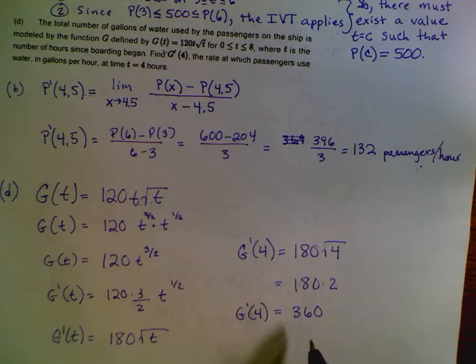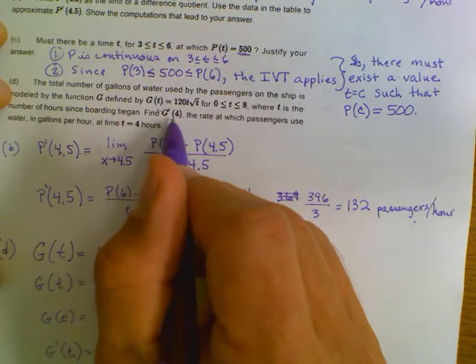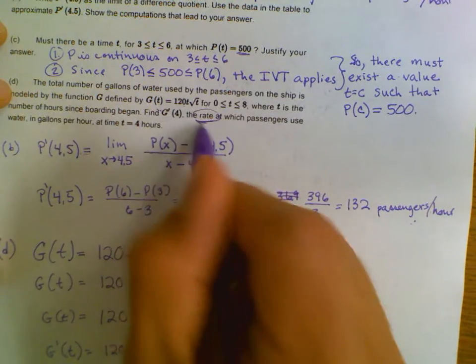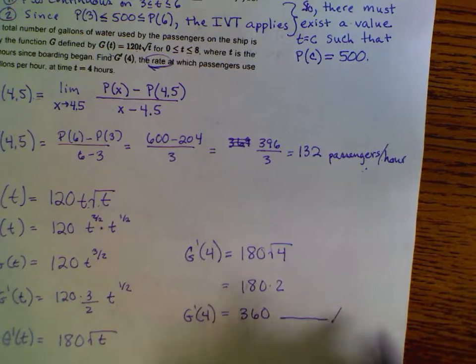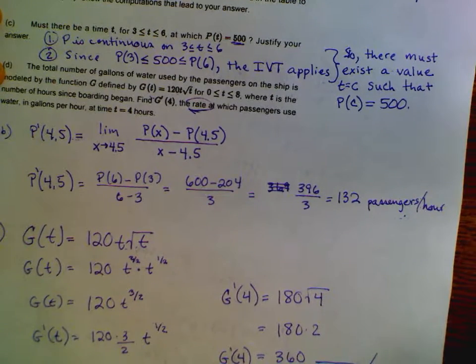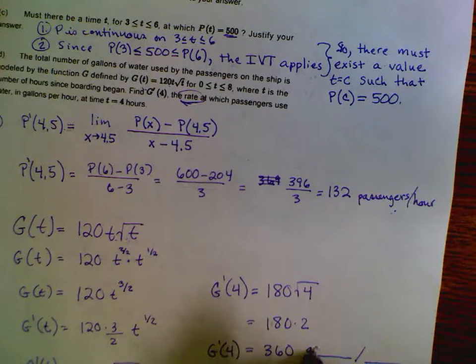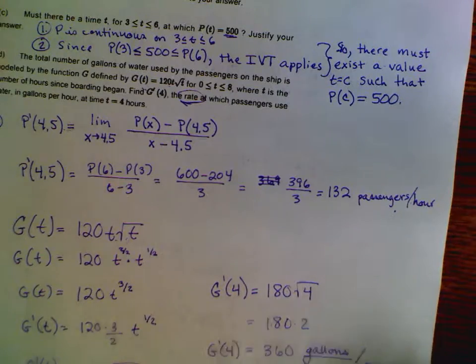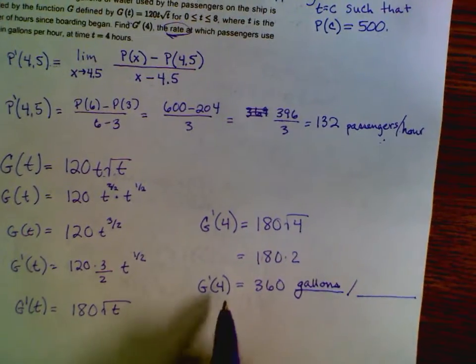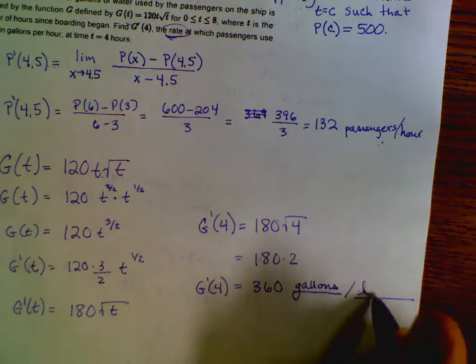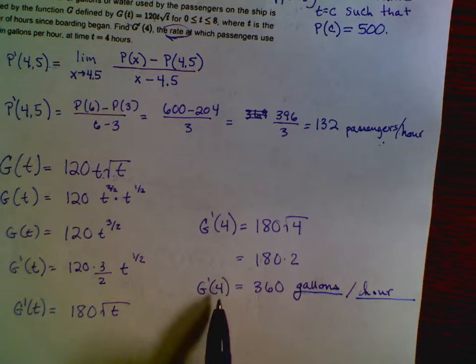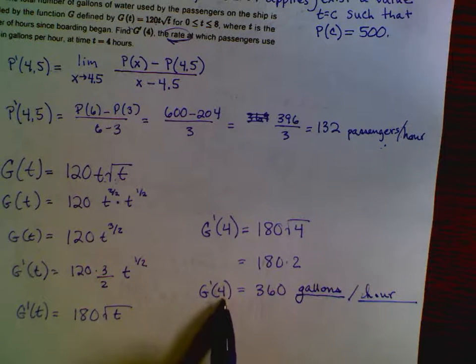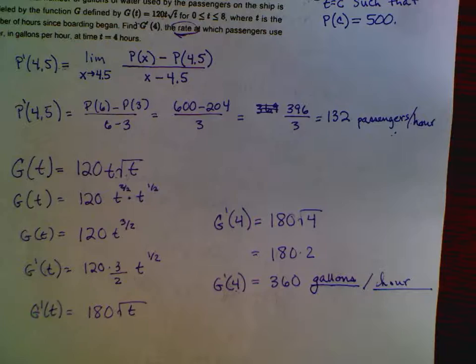And then you want to tell everybody what the units are. So 360 what? Well, G prime is a rate. It's a rate, meaning that it has some measurement divided by another measurement. So it's going to be in gallons per hour. Gallons, because G was in gallons, and T was in hours. So this is going to be gallons per hour. So it means at the specific moment, at four hours, the passengers were using 360 gallons per hour.